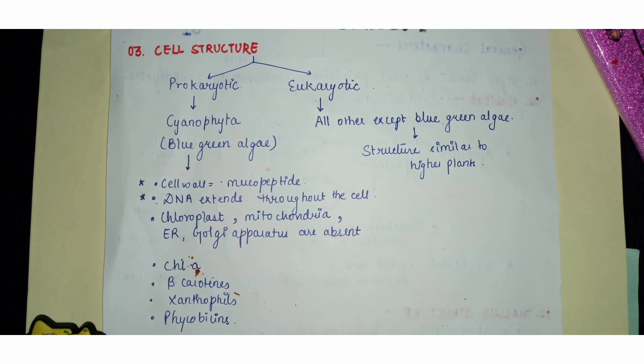The pigments of blue-green algae are also a little different from other algal forms. Chlorophyll a is almost universally present, but in blue-green algae only chlorophyll a, phycobilins, xanthophyll, and beta-carotene are present, along with several other characteristic organelles.